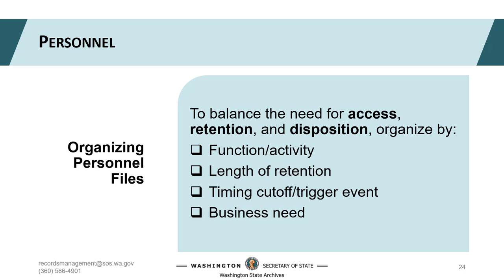Here are some ideas for managing the retention of records you'll be tempted to store together under an employee's name. These records will have varying retention lengths, so pay attention to the cutoff and not just the retention length. Within an individual's personnel file, create subfolders organized by three general categories such as health and safety, employee work history, and employee pay. Then organize files by three retention categories: short-term for records retained under six years, medium-term for records retained at least six years, and long-term for records retained 30 or more years.